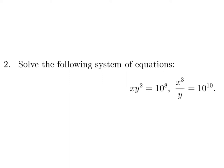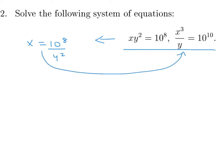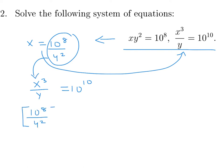Solve the following system of equations. We have to do some manipulation here — lots of ways to proceed, but let's do it simply. From the first equation, I'll put x in terms of y: x equals 10 to the power of 8 over y squared. Then I'll substitute that into the second equation: x cubed over y equals 10 to the power of 10, so 10 to the 8 over y squared, all to the power of 3, over y equals 10 to the power of 10.